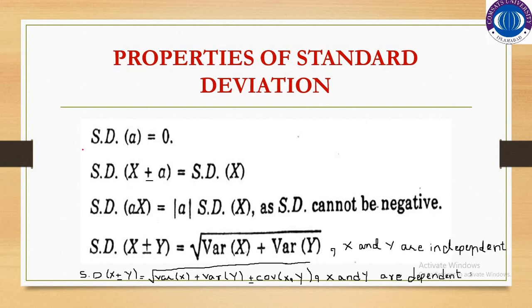Similarly, you can write the corresponding properties for standard deviation, since standard deviation is the square root of variance. The standard deviation of a constant a is always equal to 0. The standard deviation of x plus a or x minus a, where a is a constant, is always equal to the standard deviation of x, since variance and standard deviation are not affected by the change of location. When you multiply a constant, it would be equal to a times the standard deviation of x, since standard deviation cannot be negative. The standard deviation of x plus y equals the square root of variance of x plus variance of y, if x and y are independent.